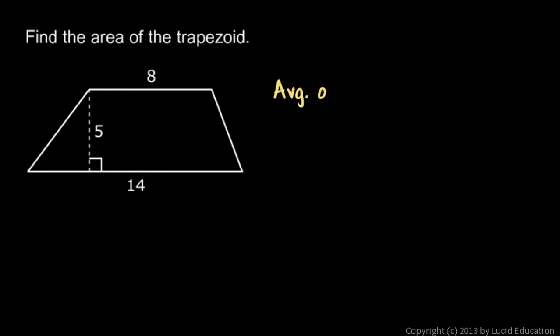And you can actually do this in your head, but I'm going to write it out. The average of the bases, well we average 8 and 14, so that's 8 plus 14 over 2, and like I said you can do this in your head. 8 plus 14 is 22 divided by 2 is 11. And then we have to multiply that by the height, so it's the average of the bases times the height.